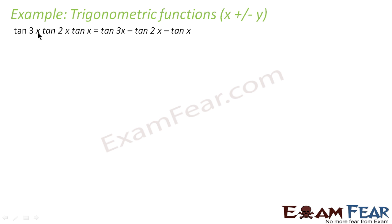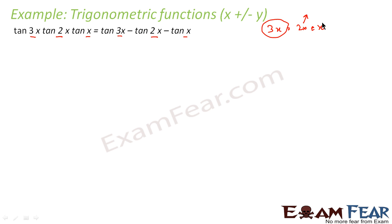Let's take one more example. We have to prove that tan 3x · tan 2x · tan x = tan 3x − tan 2x − tan x. Since tan 3x is there and we know that 3x = 2x + x, if we expand this term there is a probability that we will get some tan 2x form, tan x form, and tan 3x form. Just by observation, we have seen that 3x = 2x + x, so if we expand tan 3x we will get some useful terms.